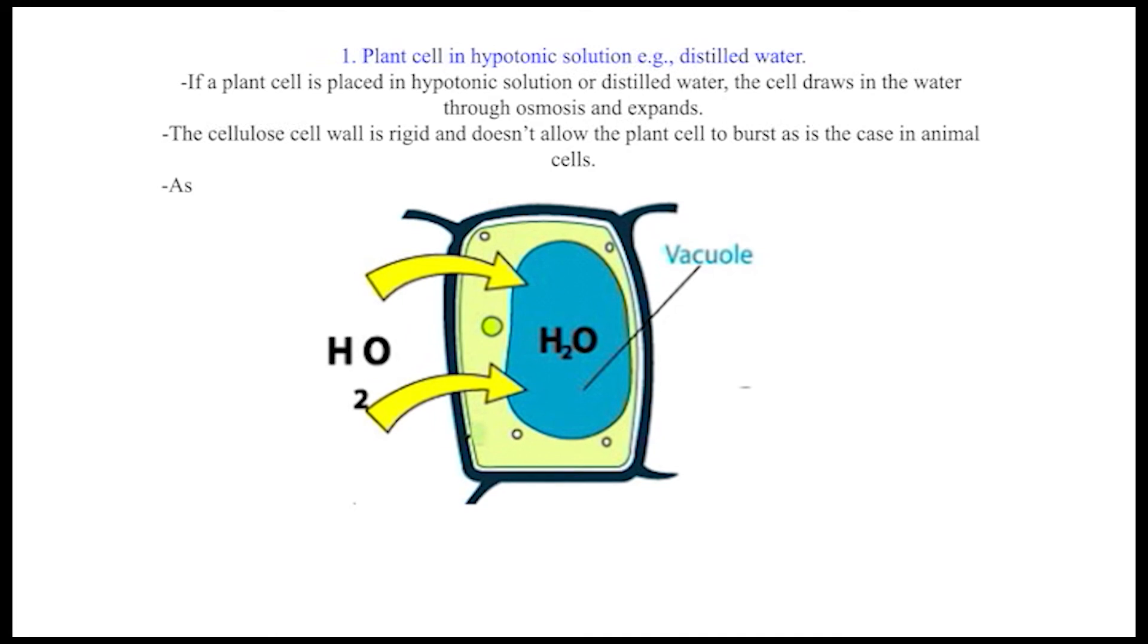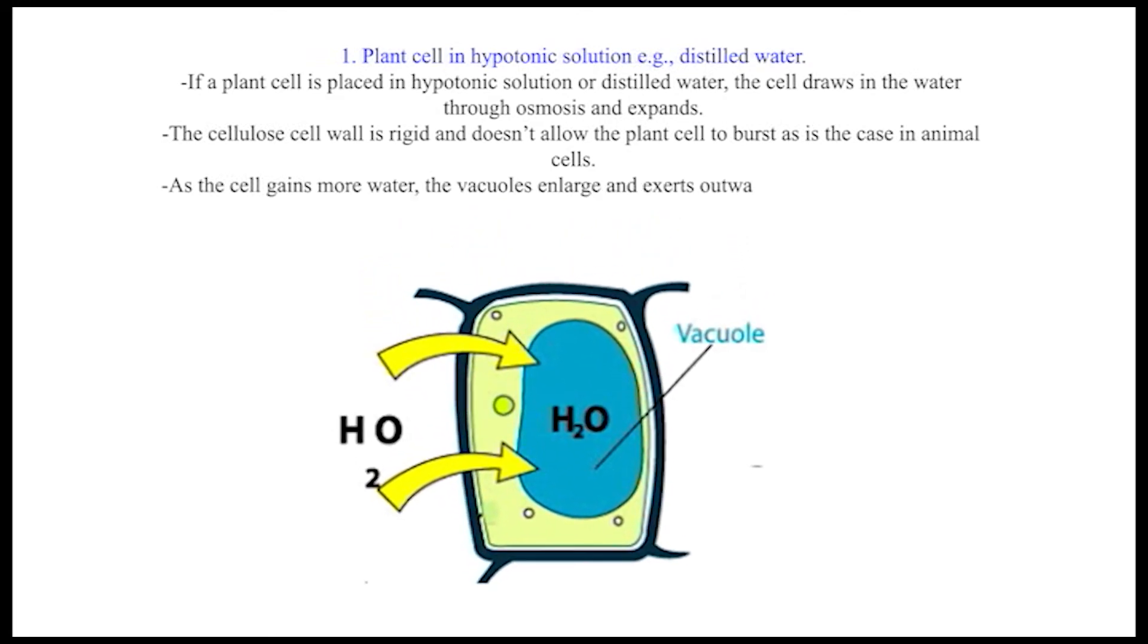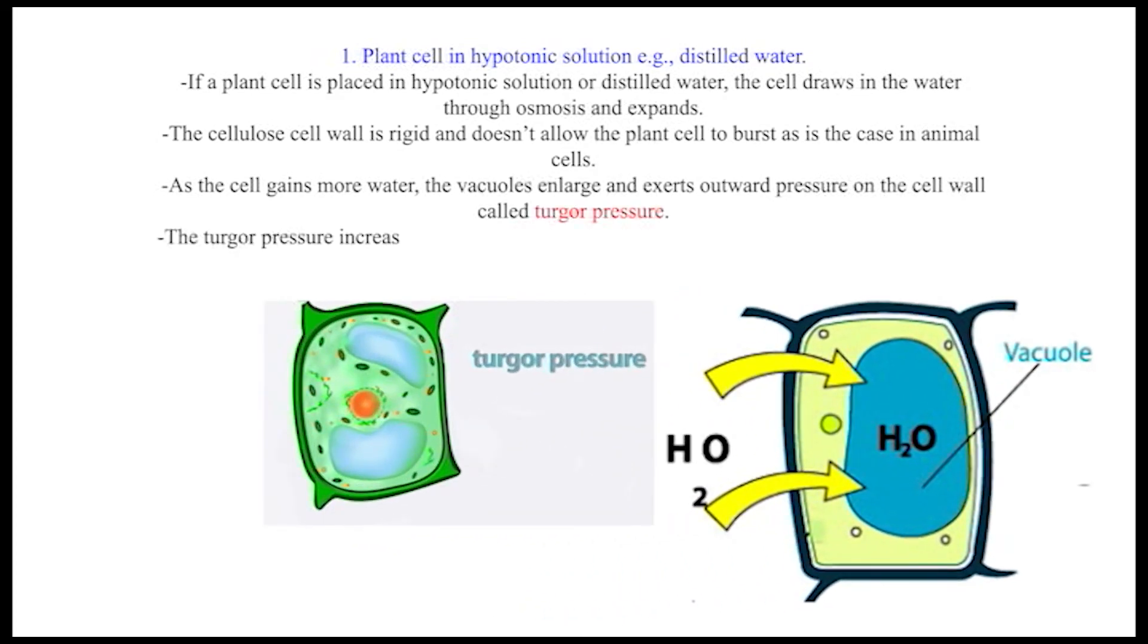As the cell gains more water, the vacuoles enlarge and exert outward pressure on the cell wall, called turgor pressure. The turgor pressure increases as more water is taken into the vacuole, causing the cell to stretch until it can't stretch anymore. The cell becomes firm and is said to be turgid.